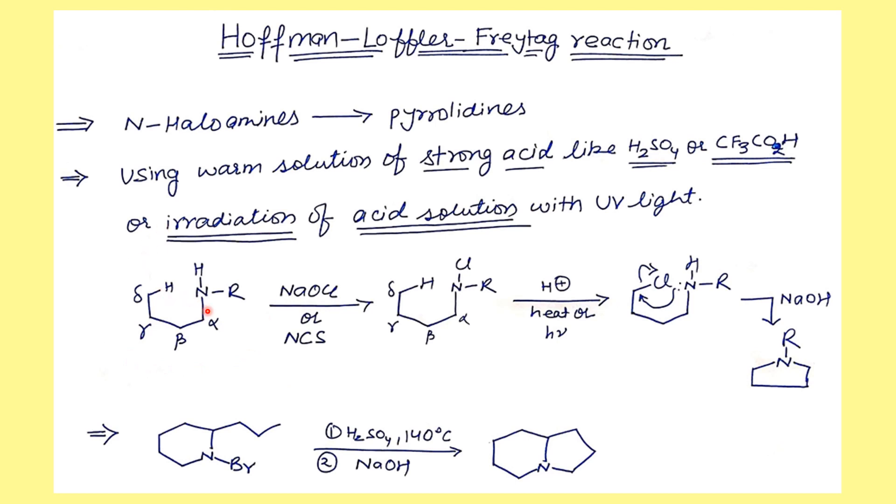We have this cyclic amine and at the delta position we have a hydrogen. That is where the chlorination takes place. We take an amine and treat it with sodium oxychloride.